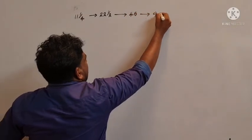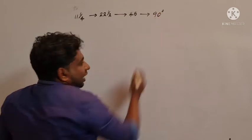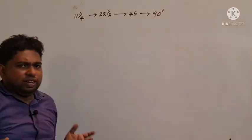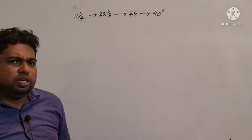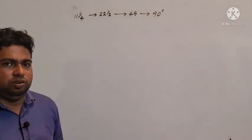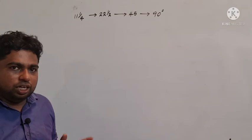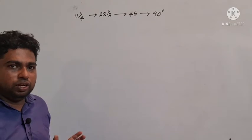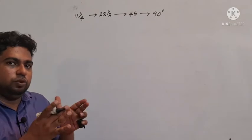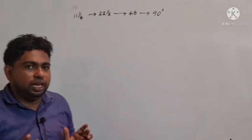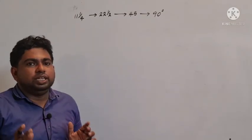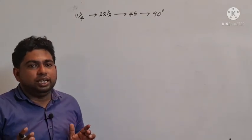90 degrees. We have a circle with a diameter. The end point of the circle is 90.